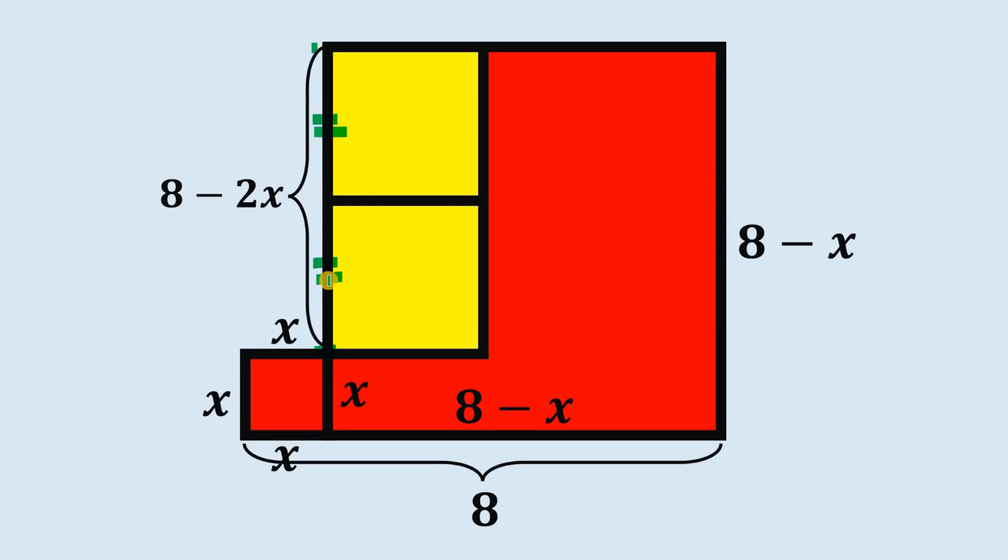We can say that each of this segment is equal to 8 minus 2x divided by 2, or simply equal to 4 minus x.